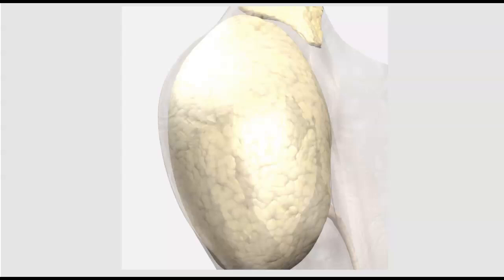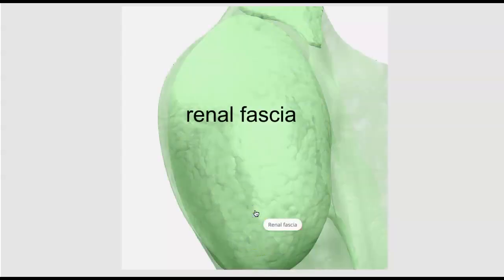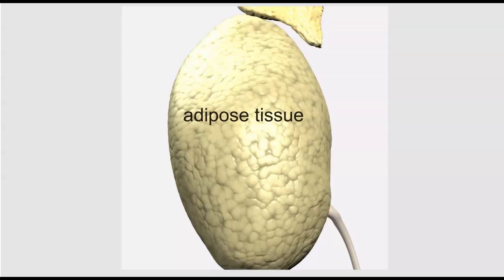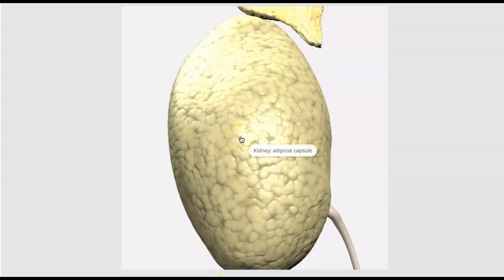The kidneys are anchored in the retroperitoneal space by connective tissue called the renal fascia. If we remove the renal fascia, highlighted green here, you can see that underneath it there is adipose tissue that encases the entire kidney.